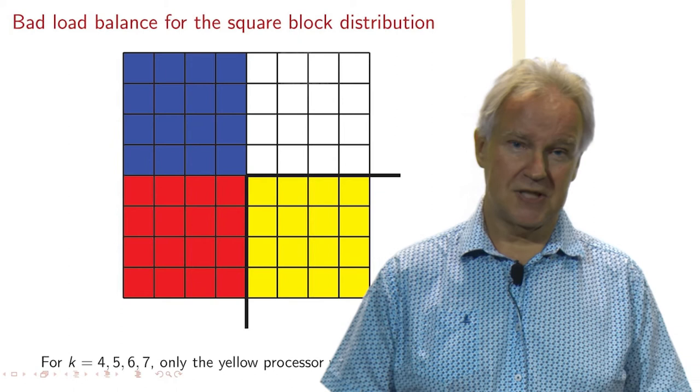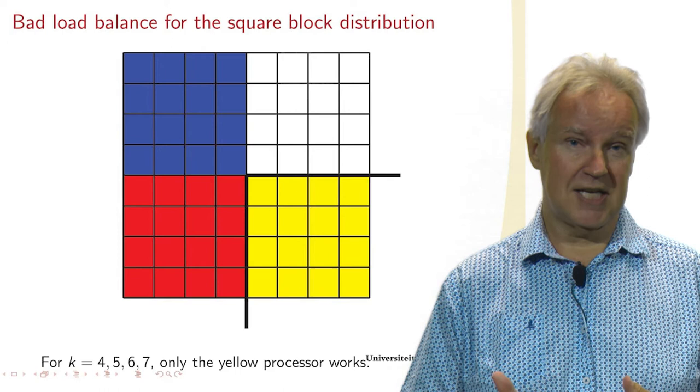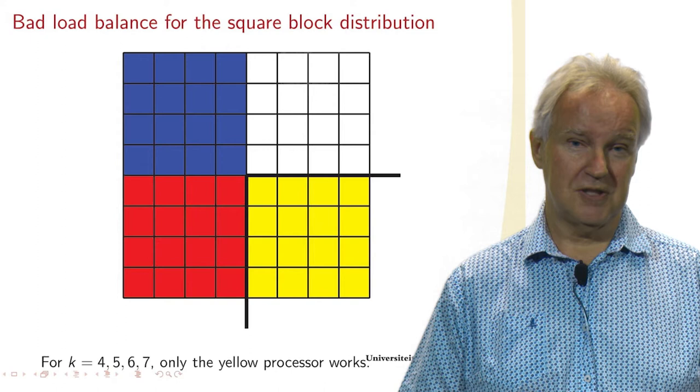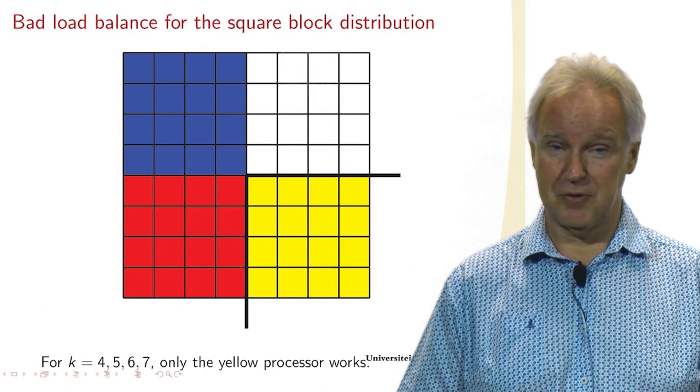Here we are halfway, and you see that halfway only the yellow processor is still working. At the start all processors worked, but from K equals 4 onwards only one processor is active. And that's not very good for load balance.